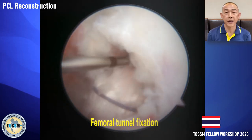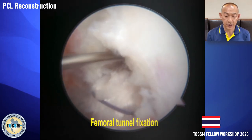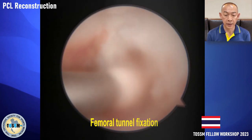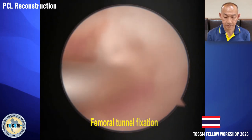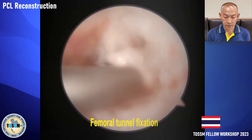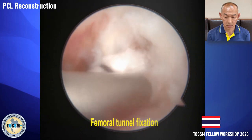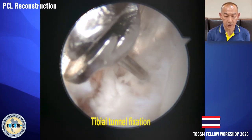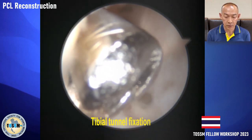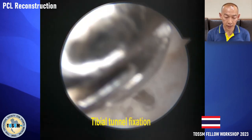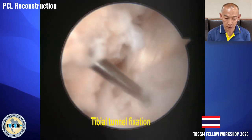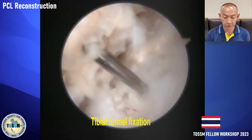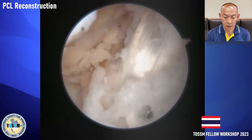We perform fixation starting with the femoral tunnel first, using an endobutton and a bio-screw. Finally, we fix the tibial tunnel with aperture fixation using a bio-screw over the guide wire. You can see the tip of the bio-screw at the aperture fixation site and the PCL graft in place.